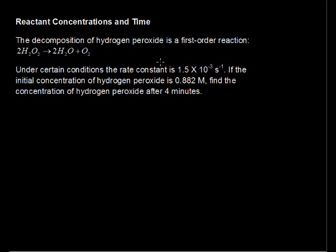Under certain conditions, the rate constant is 1.5 times 10 to the negative 3 per second—that's the S to the negative 1, that means per second, and that's the units for this rate constant. If the initial concentration of hydrogen peroxide is 0.882 moles per liter, the molarity, find the concentration of hydrogen peroxide after 4 minutes.